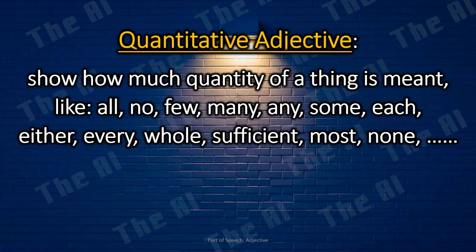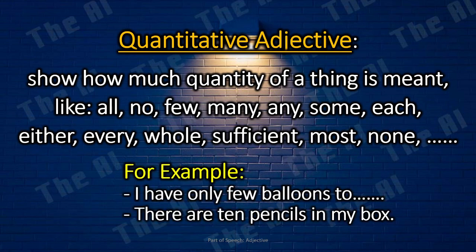Quantitative Adjective. Adjectives of quantity show how much quantity of a thing is meant, like all, no, few, many, any, some, each, either, every, whole, sufficient, most, none, and little. For example: I have only few balloons to decorate the room. There are ten pencils in my box.